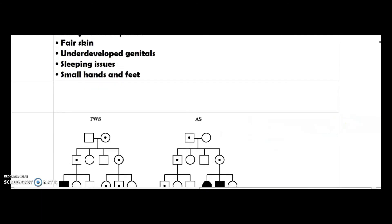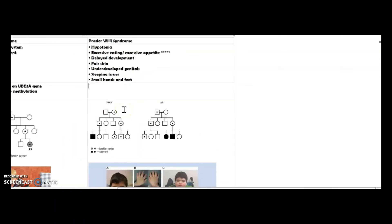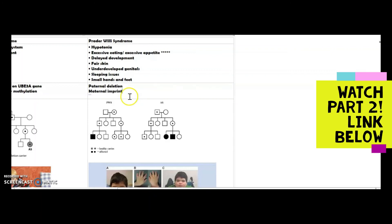For the deletion, we can do like we did for the other one, just kind of briefly talk about it. For Prader-Willi syndrome, we have paternal deletion as we explained in the pedigree, and maternal imprint.